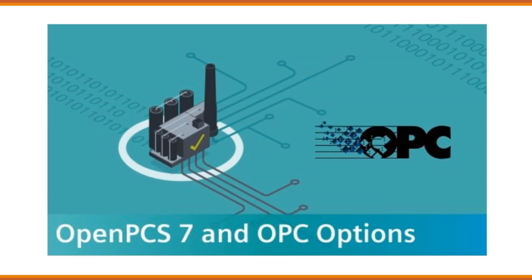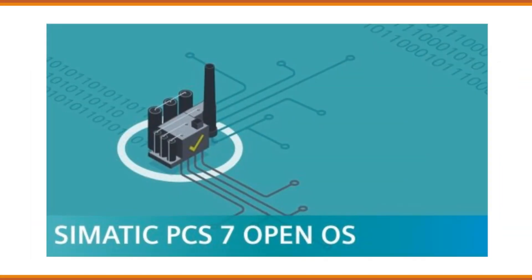Open PCS7 refers to the openness and interoperability features of the PCS7 system. It allows for seamless integration with other automation systems, devices, and software applications, enabling flexibility and compatibility in industrial automation environments. OPC is a standardized communication protocol widely used in industrial automation for exchanging data between different devices and software applications, and PCS7 supports OPC connectivity to communicate with a wide range of third-party devices and software systems.